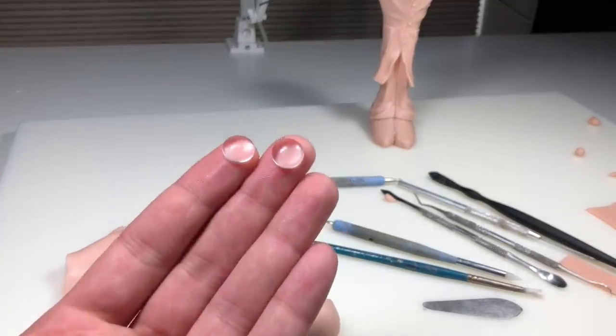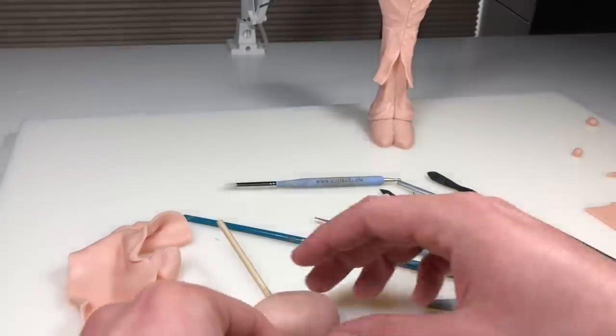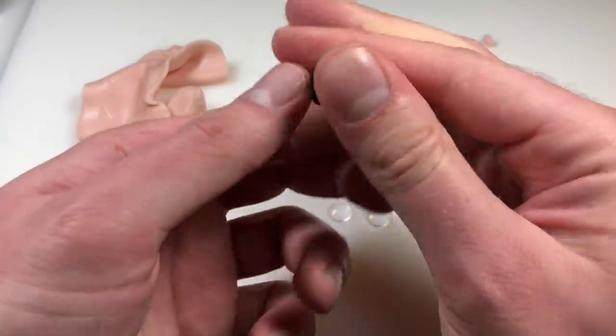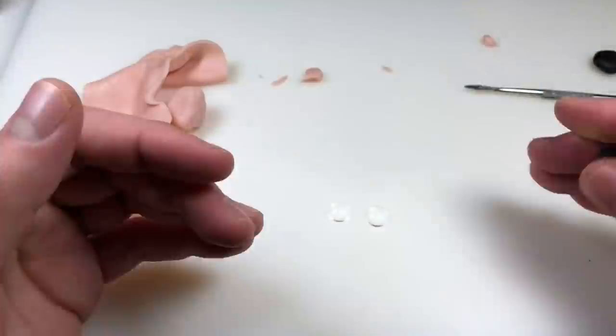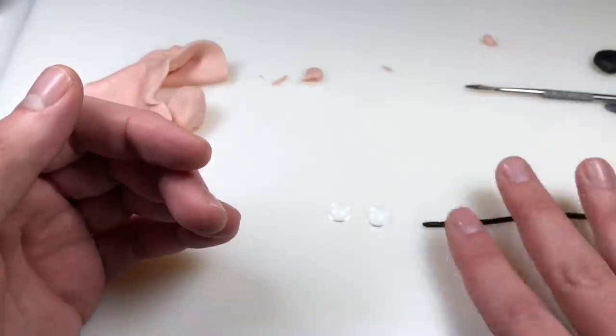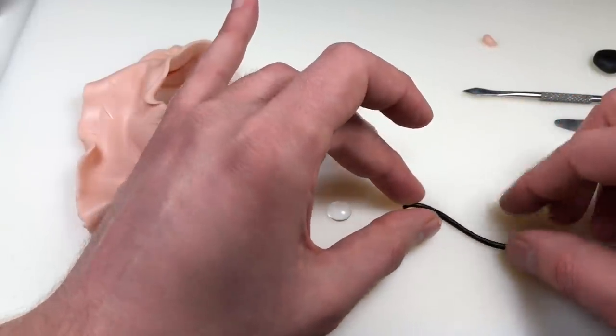To create the goggles I'm going to be using a couple 12mm cabochons. These are going to be the lenses and they're going to magnify his eyes to create a realistic goggle effect. And this is that cool little tip that I mentioned in the intro.